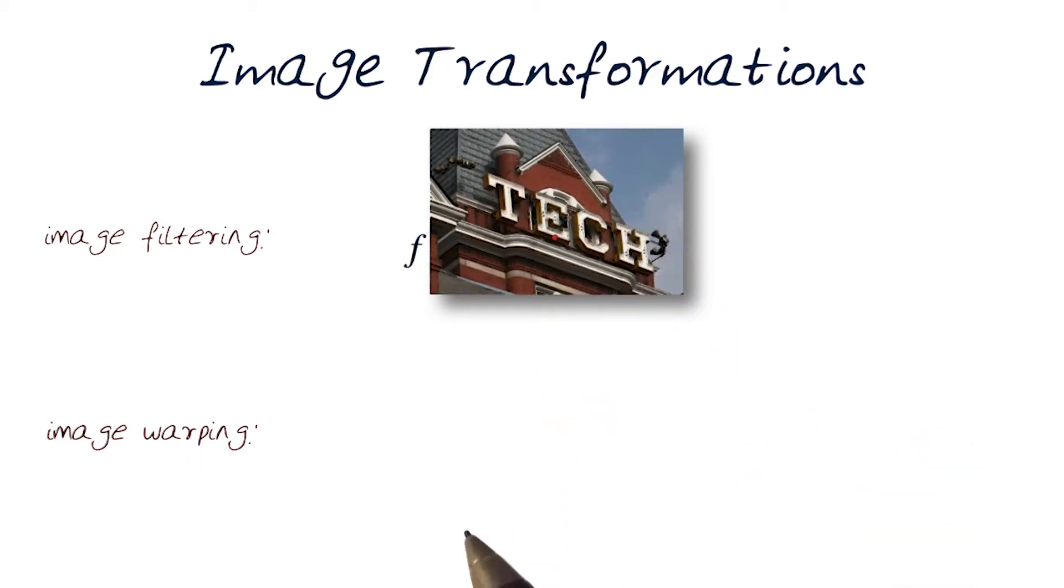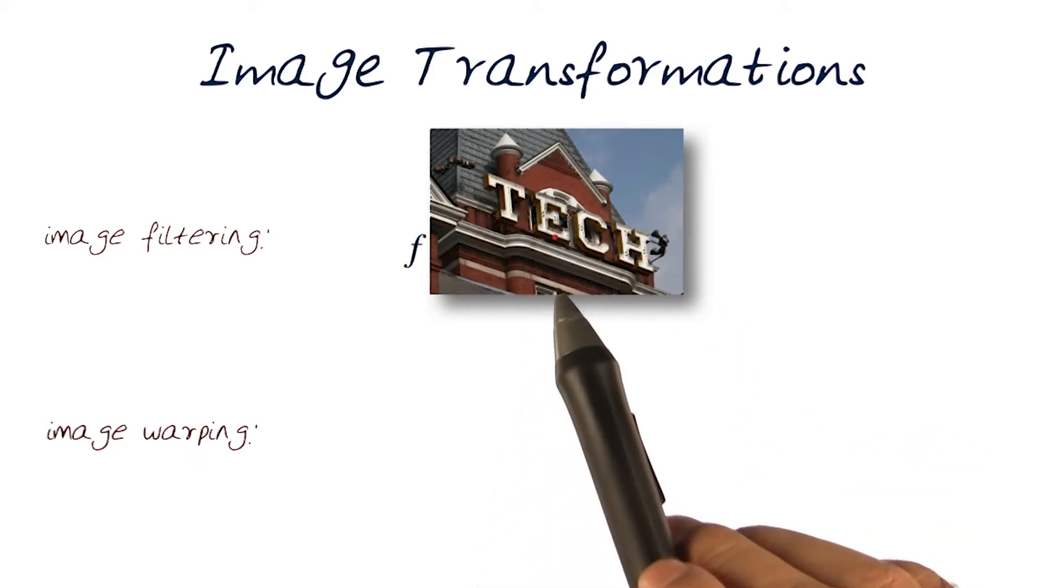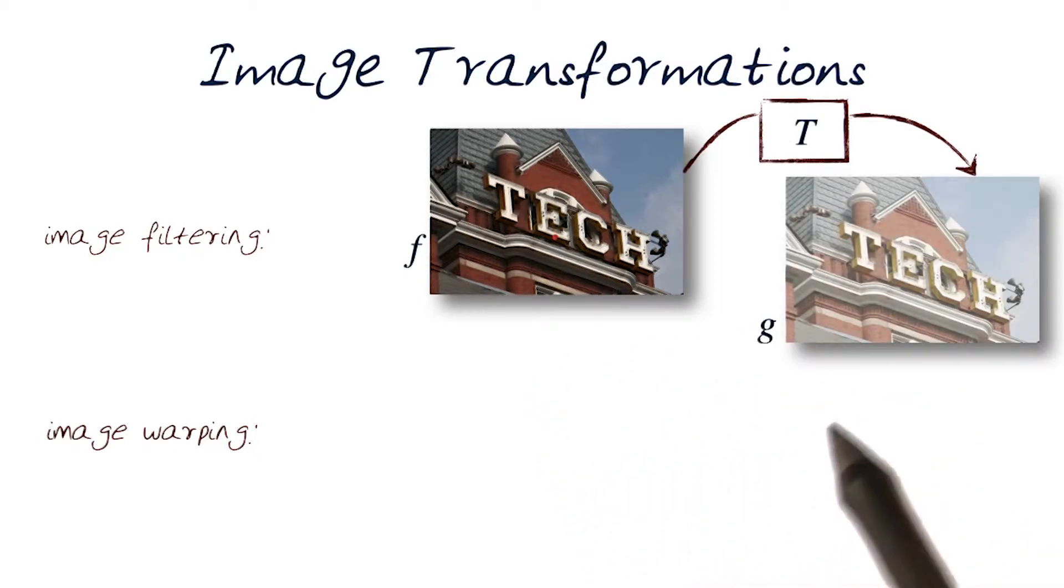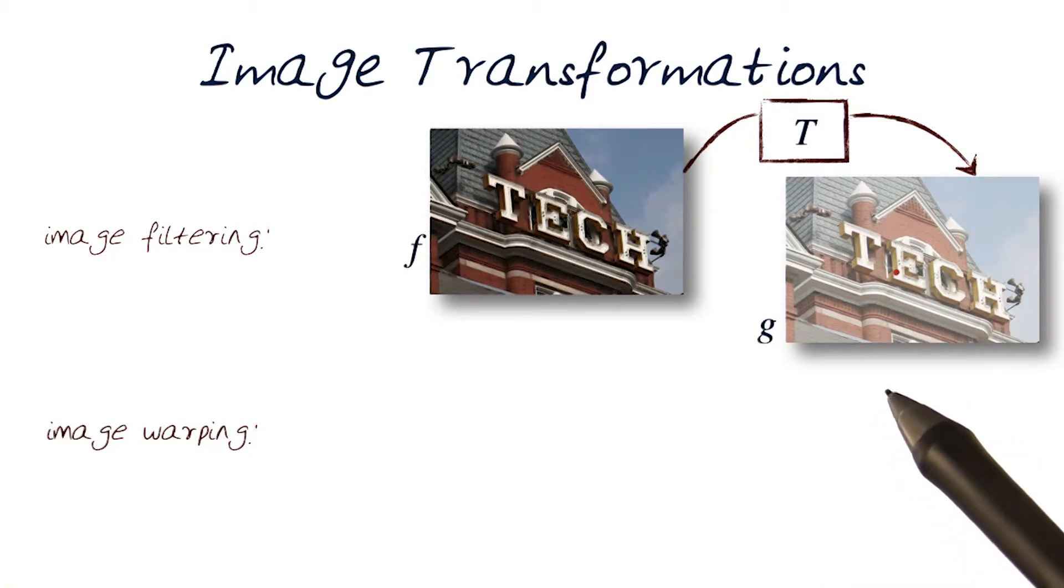So here, assume we have an image F, and what we're interested in doing is some sort of a transformation. For example, what we've looked at is we've transformed this image to a new one. And here, hopefully you can see that this image is now much brighter.